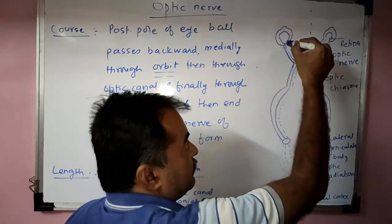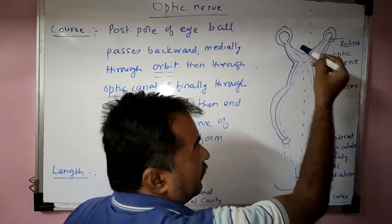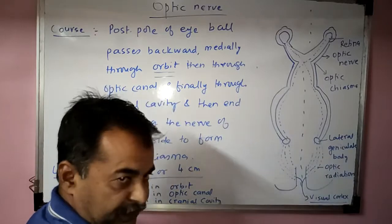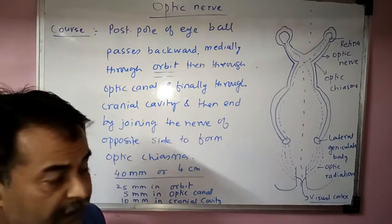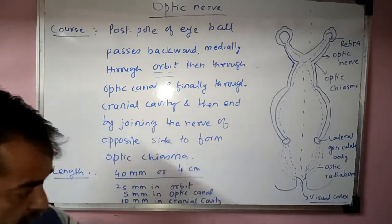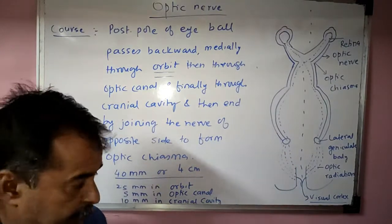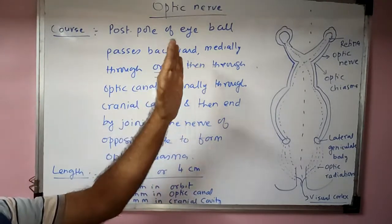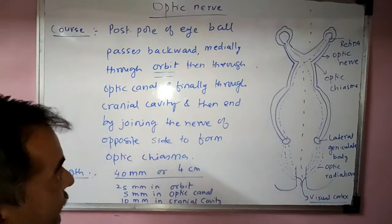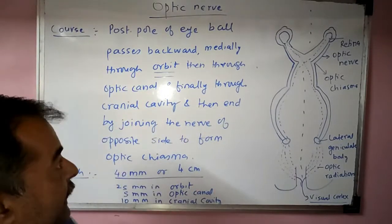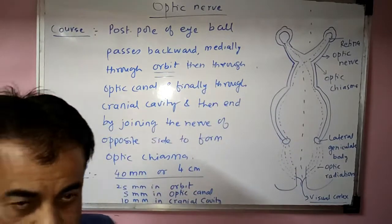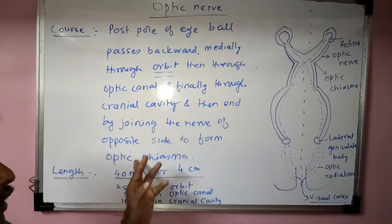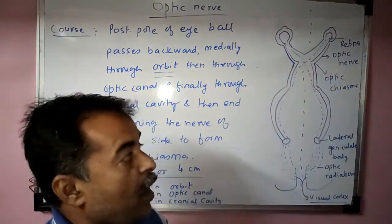The left and right optic canals meet and the meeting point is called the optic chiasma, where the nerve ends by joining with the nerve of the opposite side. So to summarize the course: the nerve arises from the posterior pole of the eyeball from the retinal ganglionic layer, runs backward and medially through the orbit, then through the optic canal, then through the cranial cavity, and finally ends by joining the nerve of the opposite side to form the optic chiasma.